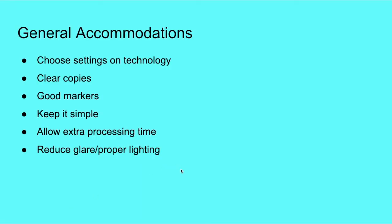Here's a quick overview of some general accommodations you can start using for students with visual impairments — and these are good for most, if not all, students in your classroom. With my background in special education and the resource room, a lot of these accommodations help all students, whether they have learning difficulties, attention deficits, or other needs. As you may have noticed throughout this PowerPoint, I've had different backgrounds on the different slides. With students with visual impairments, a black background with white text might be a little easier for them to read, while a blue background may be more soothing. Let your student choose the settings on the technology they're using — whether it's their iPad, laptop, or Chromebook — so they can personalize it to their needs.